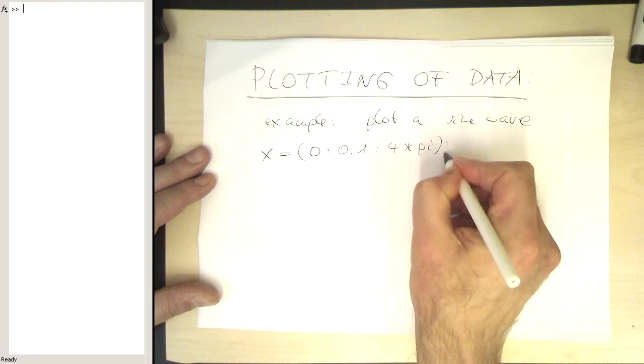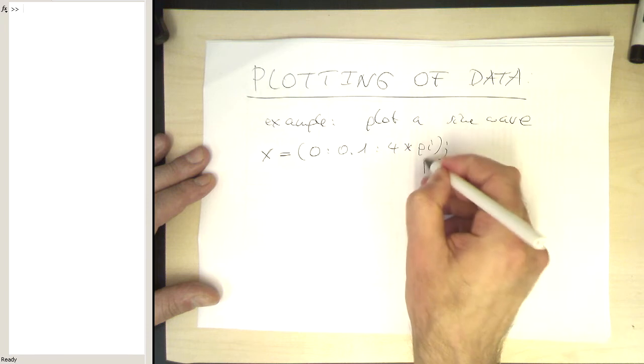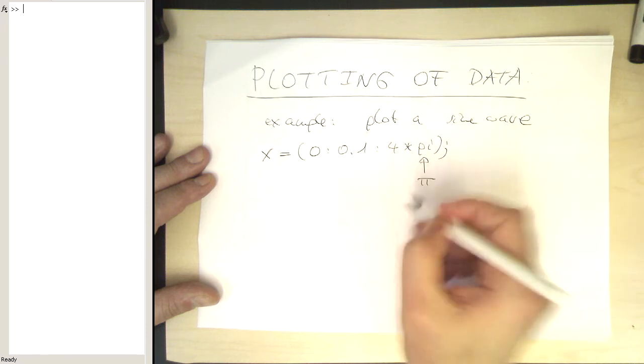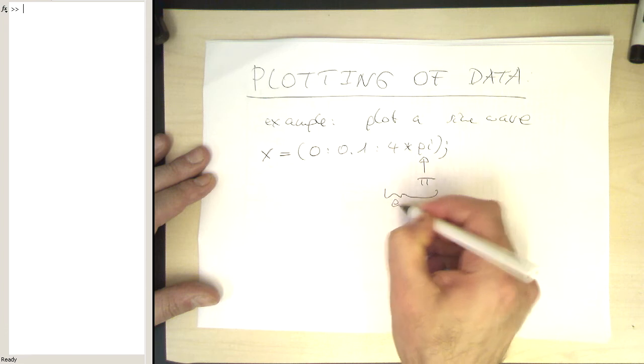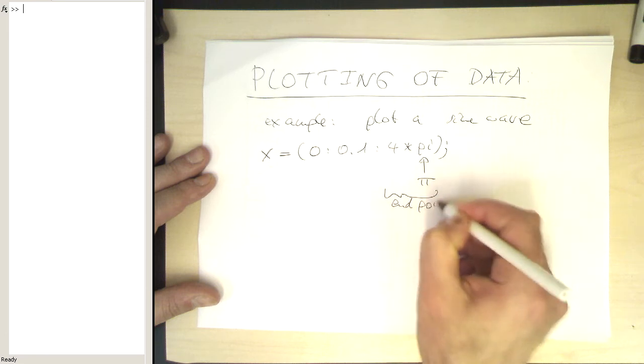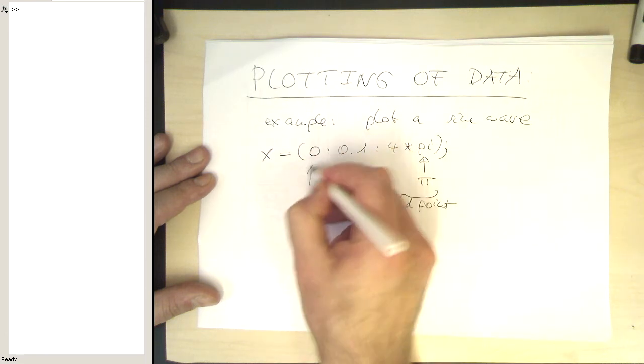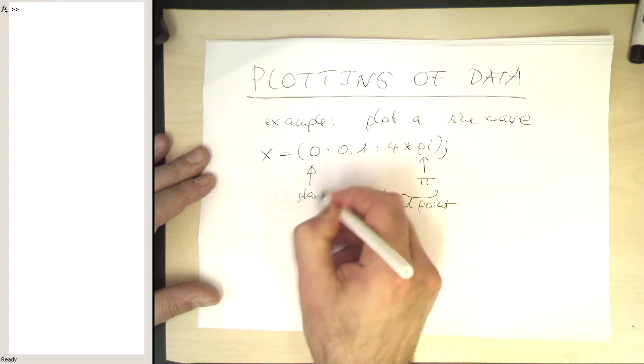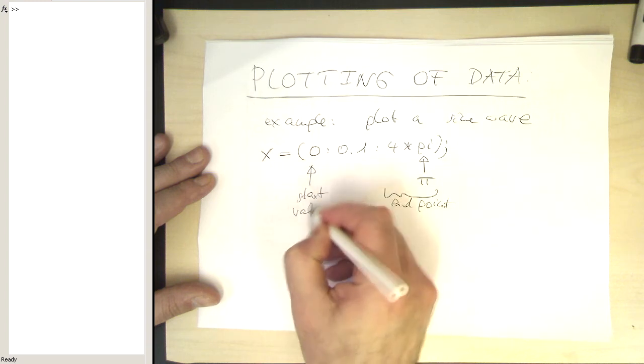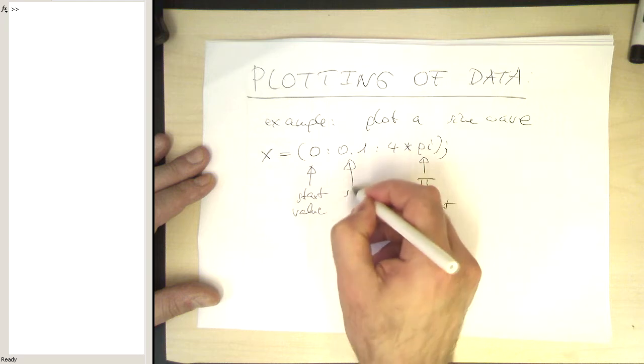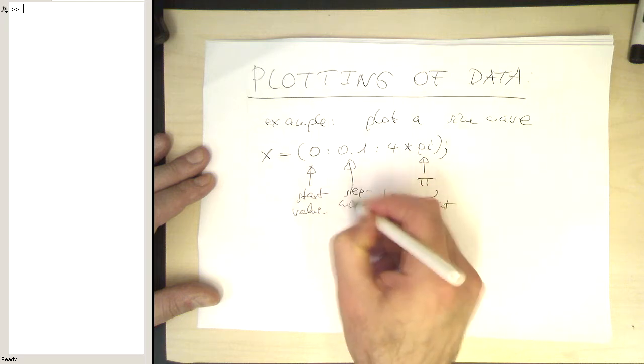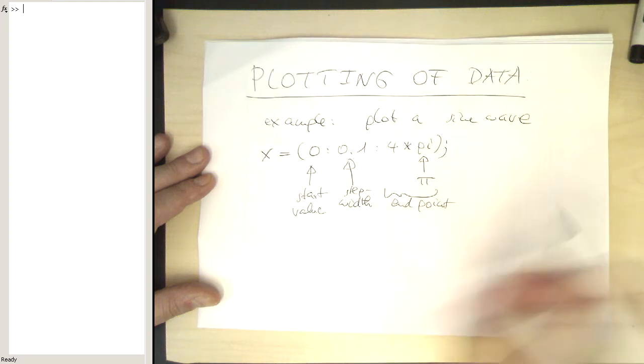So pi is already predefined, that's our pi here, so that's our end point in the vector, that's our start value. And this is the step width.